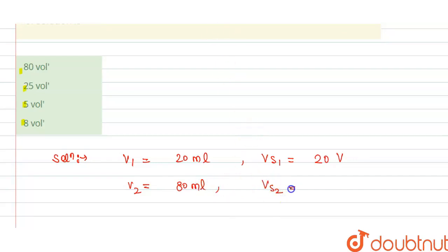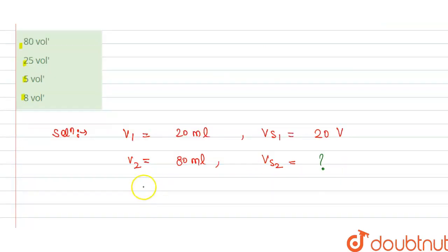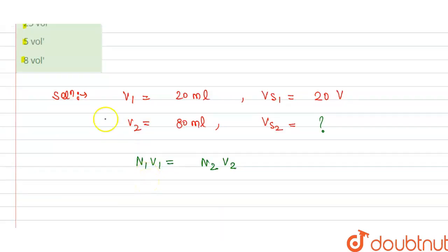So we know that normality N₁ multiplied by volume V₁ equals normality N₂ multiplied by volume V₂, or we can say that